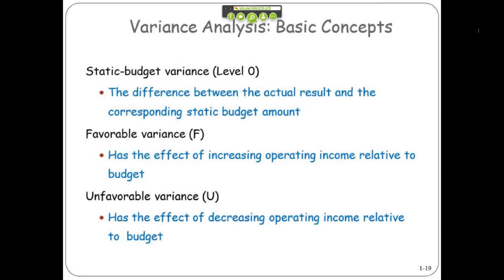You start off with the static budget variance. Then you go down further and further. The static budget variance is what we saw there. You look for favorable variances and unfavorable variances.